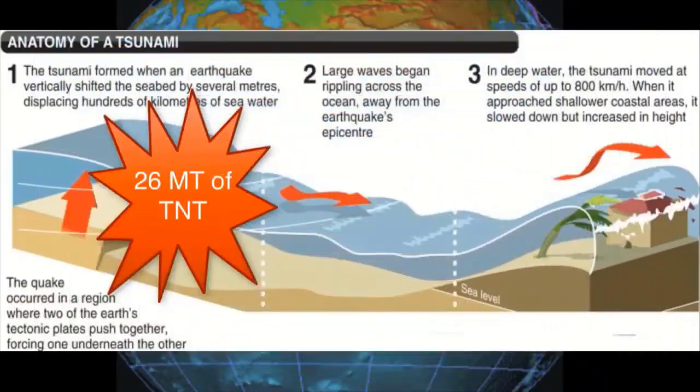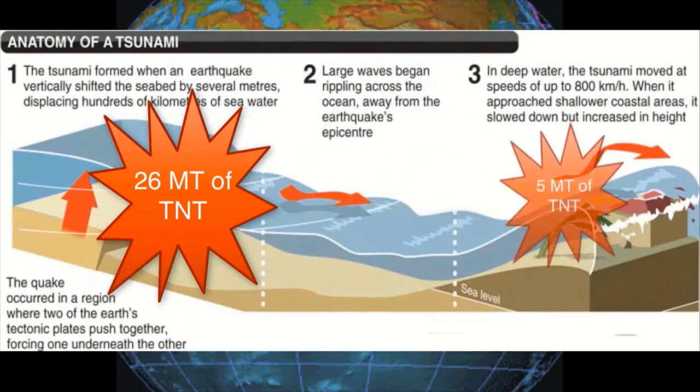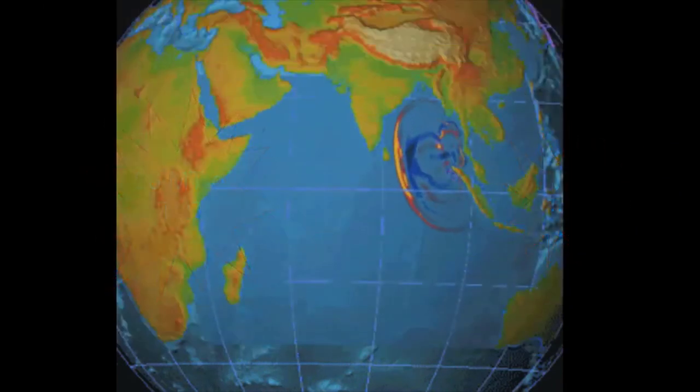A lot of the energy released by the earthquake was dissipated or used in traveling across the Indian Ocean. But a whopping 20% of the earthquake's energy, the equivalent of roughly 5 megatons of TNT, was unleashed by the tsunami waves crashing onto the coast surrounding the Indian Ocean. Hence the undersea earthquake's destructive energy was transported to the coastlines of the Indian Ocean by waves.